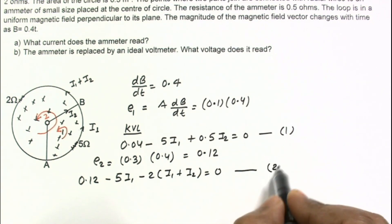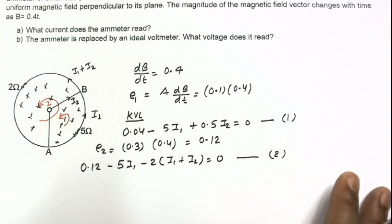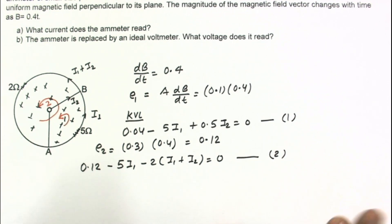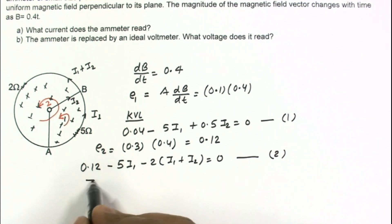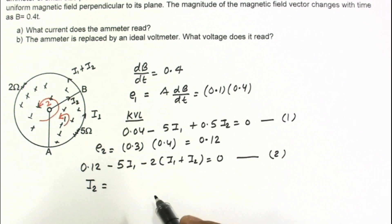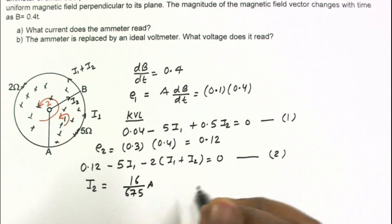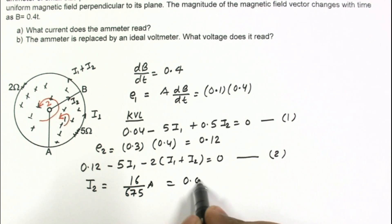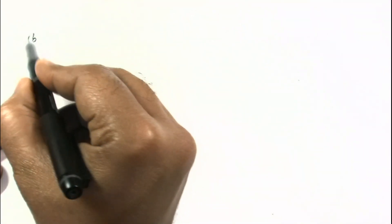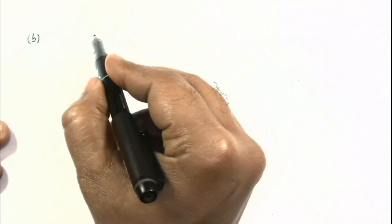Solving these two equations gives the values of i1 and i2. The ammeter reading is i2, which works out to 16/675 amperes, or approximately 0.0237 amperes. This is the answer for part (a).